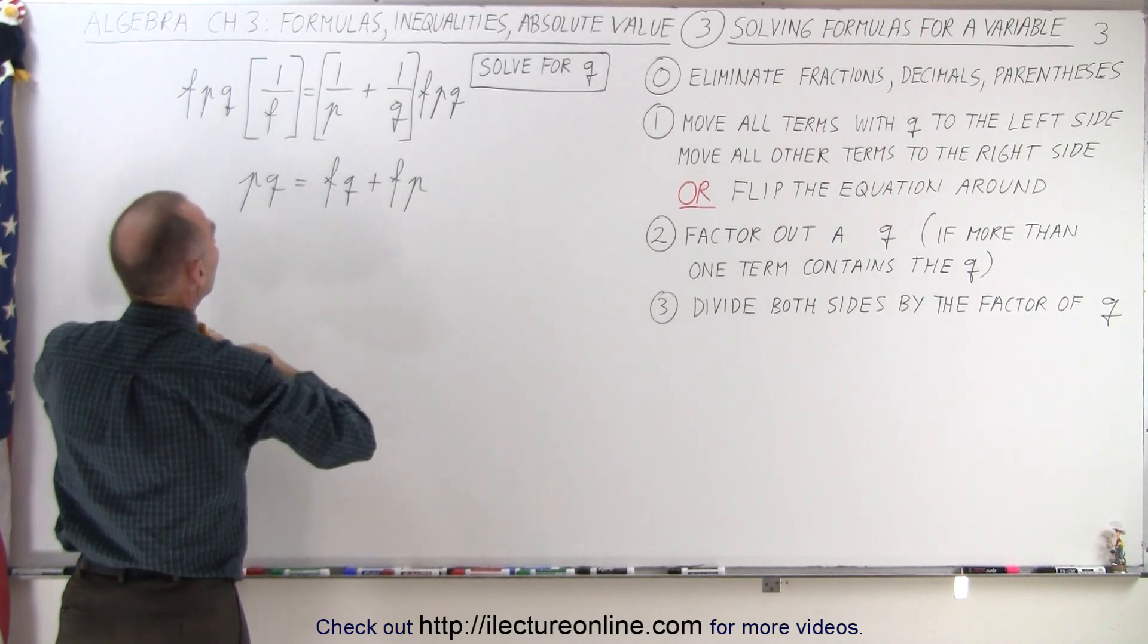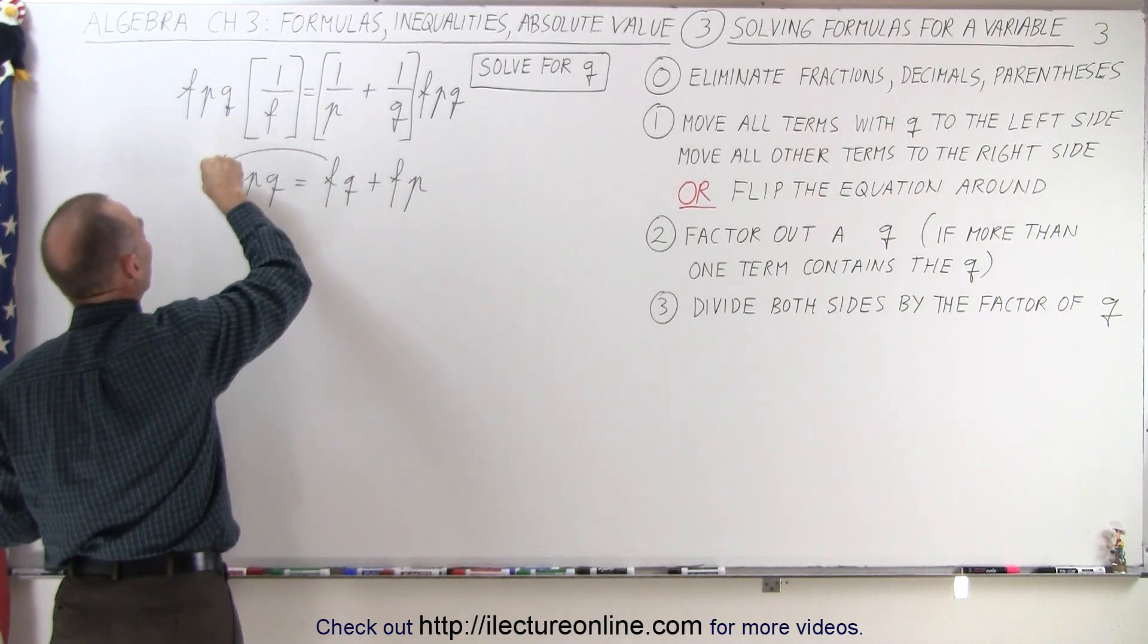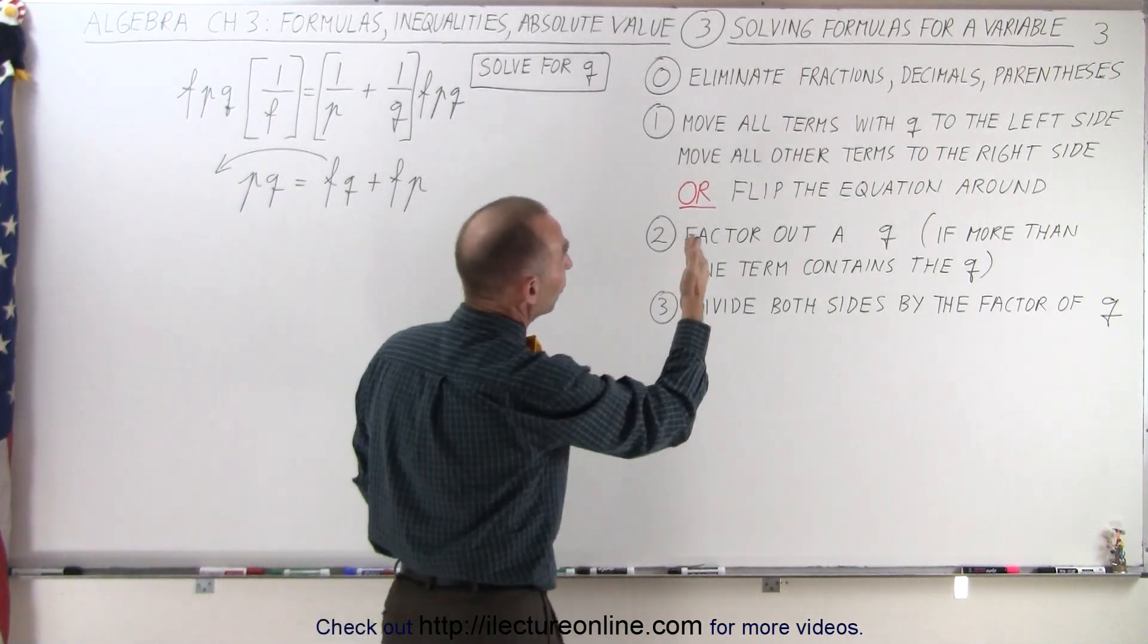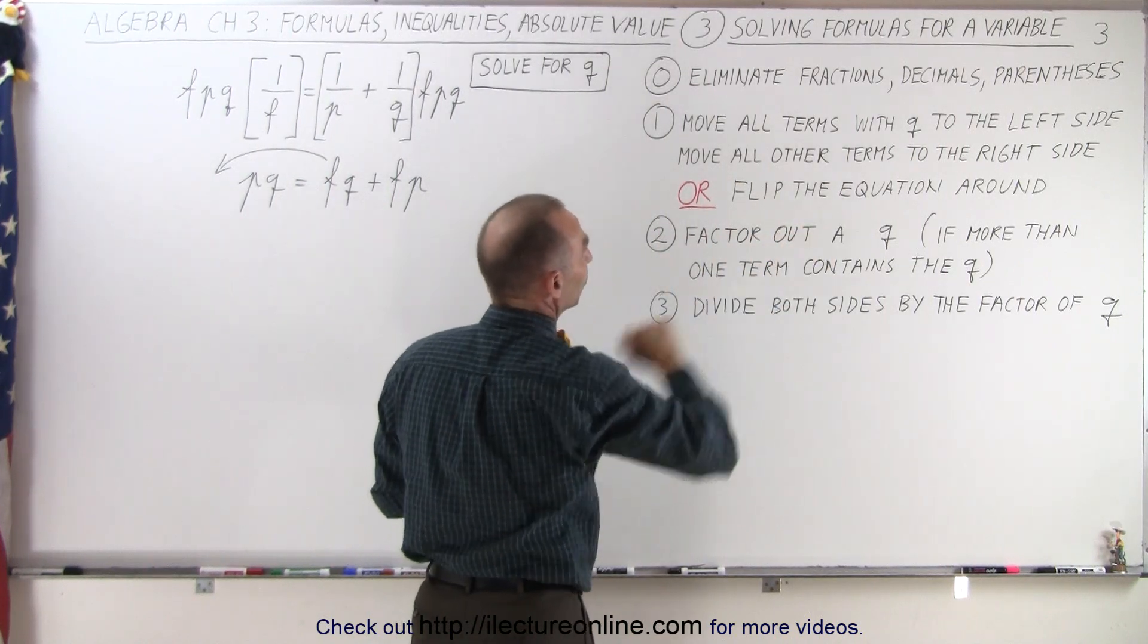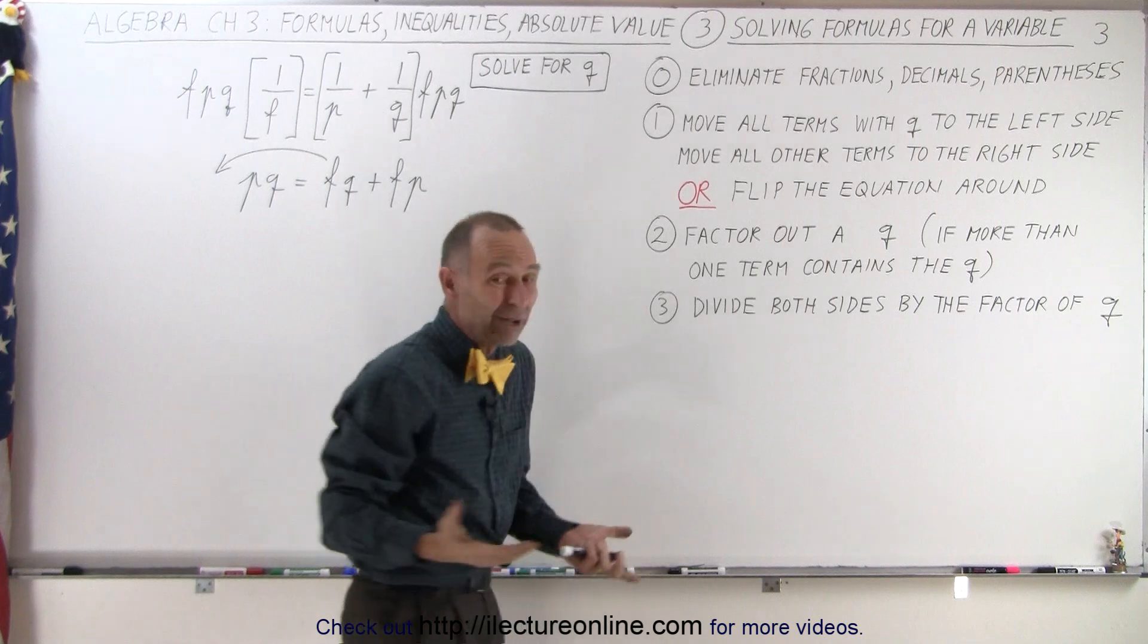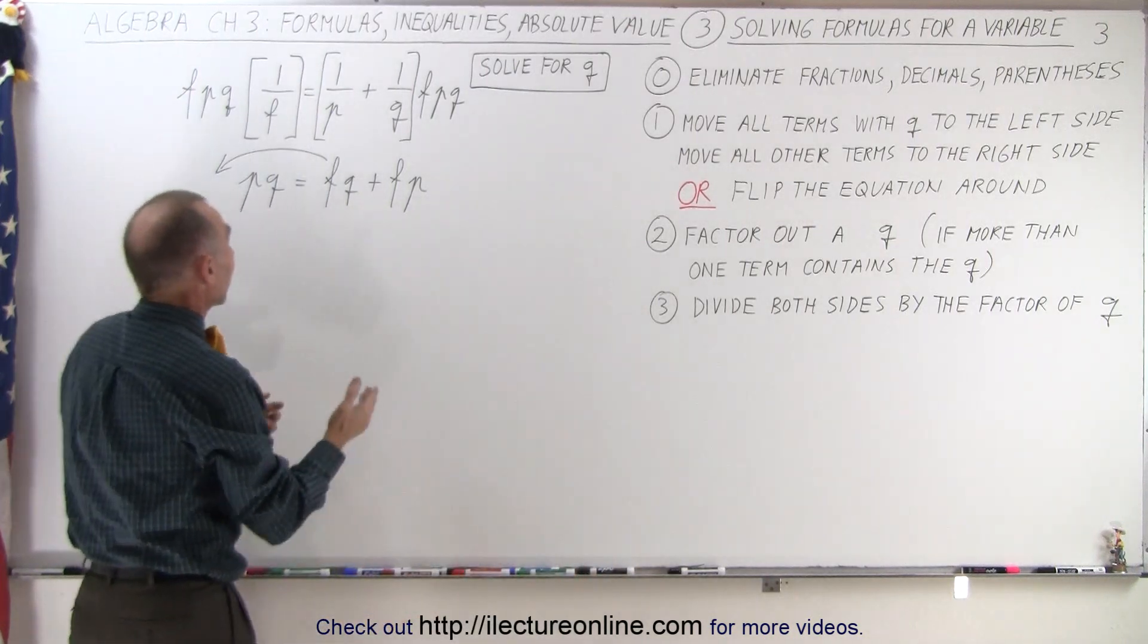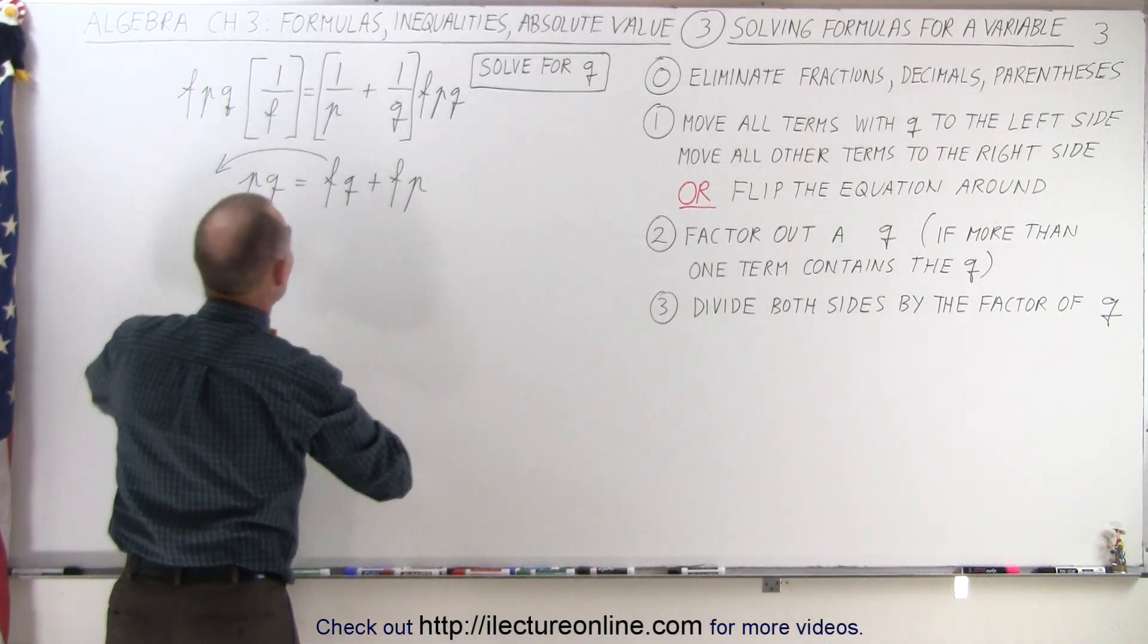So we're going to move this term to the left side to follow step number two. Step number two says move all the variables or all the terms with Q to the left side, and all the other terms to the right side, or flip the equation around. Flipping the equation is not going to help us. We're simply going to move the term.